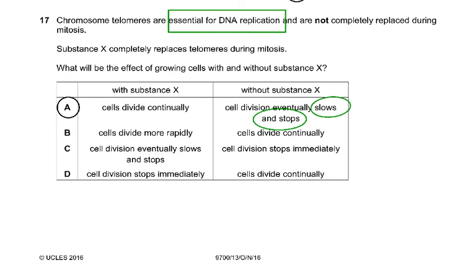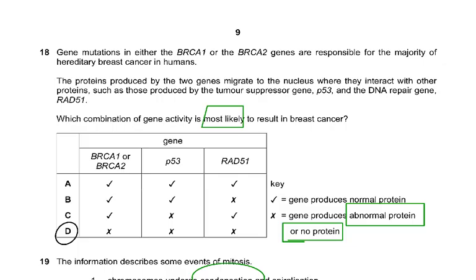Question seventeen: chromosome telomeres are essential for DNA replication but are not completely replaced during mitosis. Substance X completely replaces telomeres during mitosis. With substance X, cells divide continuously. Without substance X, cell division eventually slows and stops because telomeres are progressively lost. The answer is A.